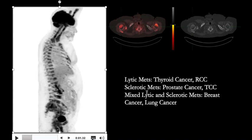Lytic bone metastasis are typically from thyroid cancer and renal cell cancer. Sclerotic metastasis are predominantly from prostate cancer and transitional cell cancer. Mixed lytic and sclerotic metastasis are typically from breast, chest, and lung cancer. Thank you for watching.